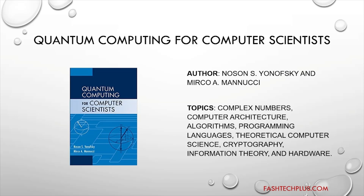The fifth book is 'Quantum Computing for Computer Scientists,' published by Cambridge Press and is entirely self-contained. It does not demand that readers must come with a large toolbox of skills. It contains many exercises which are strongly recommended and serious readers must attempt to solve. There are also hands-on exercises that can be carried out on your laptop to gain a better understanding of the concepts.